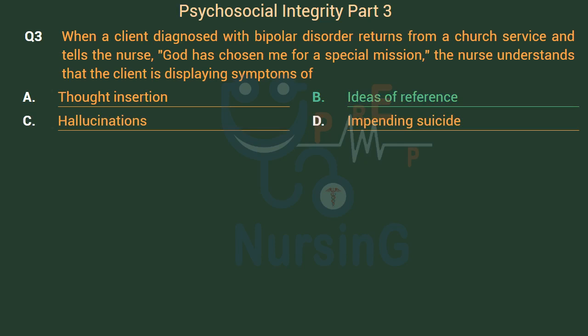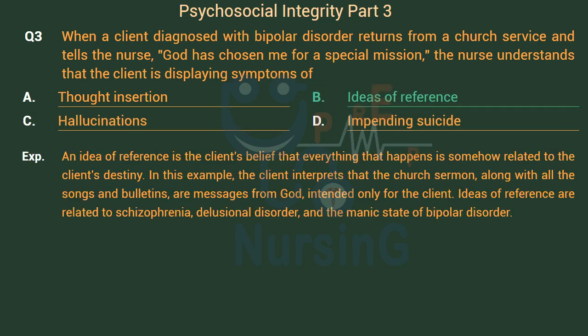The right answer is Option B: Ideas of reference. An idea of reference is the client's belief that everything that happens is somehow related to the client's destiny. In this example, the client interprets that the church sermon, along with all the songs and bulletins, are messages from God intended only for the client. Ideas of reference are related to schizophrenia, delusional disorder, and the manic state of bipolar disorder.